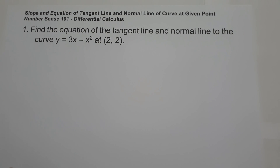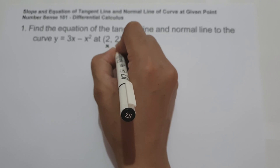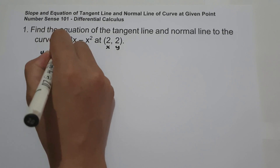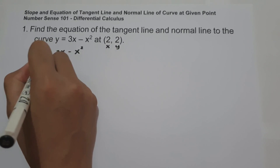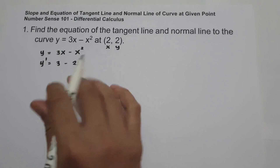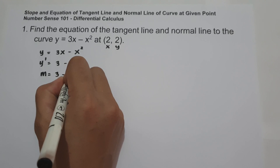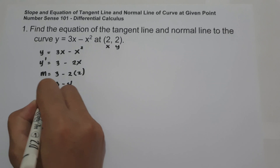On number one, find the equation of the tangent line and normal line to the curve y equals 3x minus x squared at (2, 2). Since we have values for x and y, we differentiate and substitute x. So y prime equals 3 minus 2x. Substituting x = 2: slope equals 3 minus 2 times 2, which gives 3 minus 4, that is negative 1.